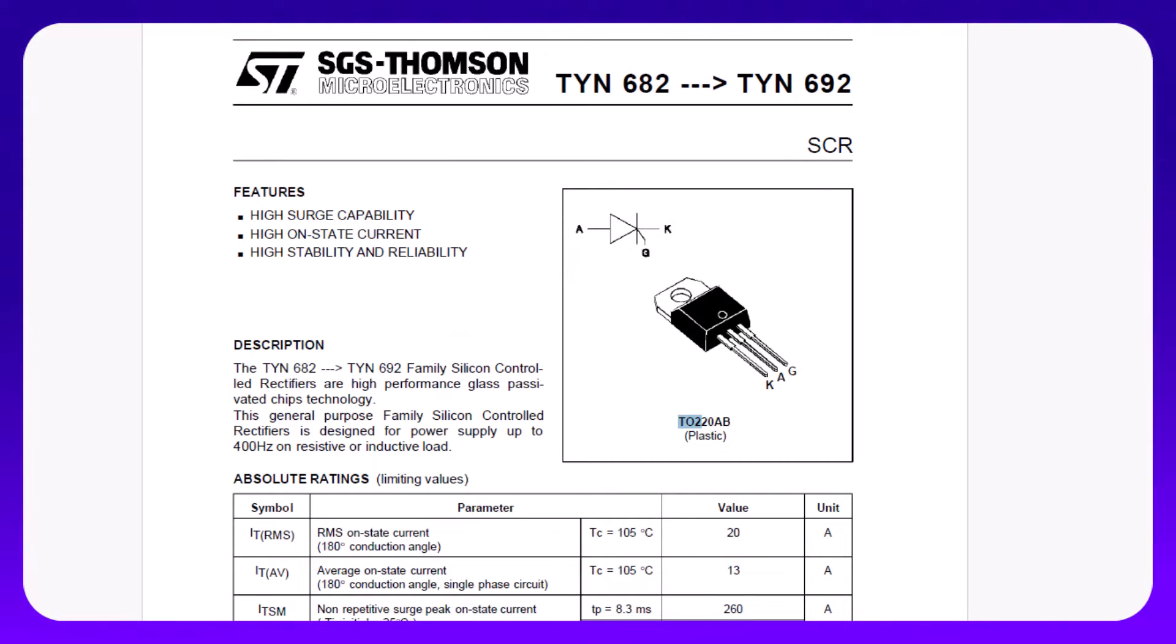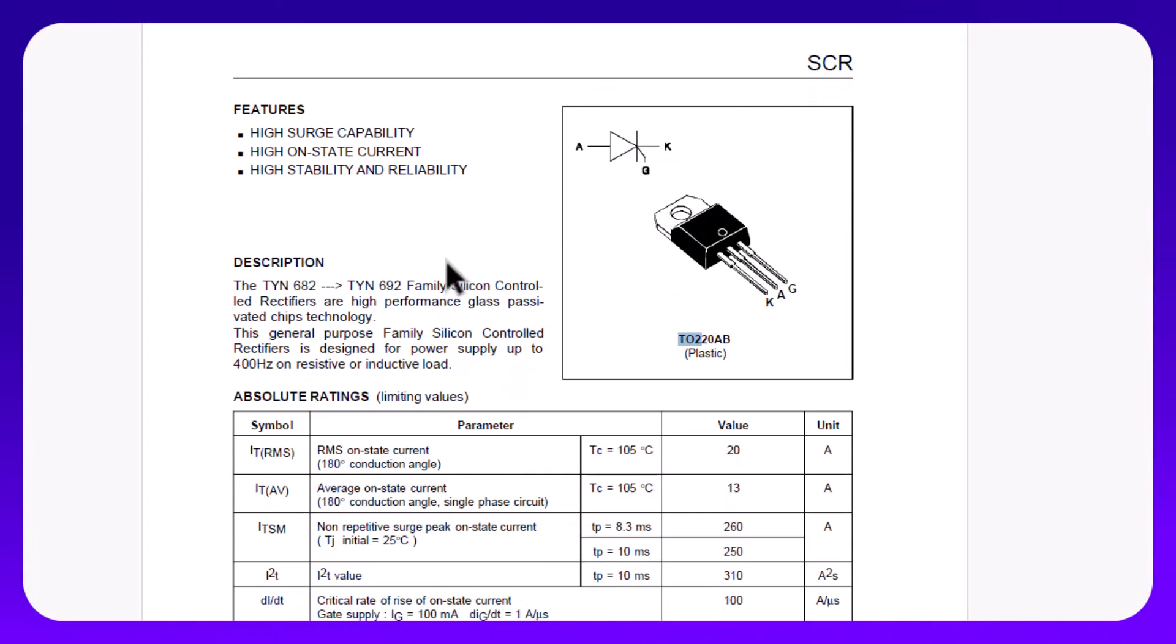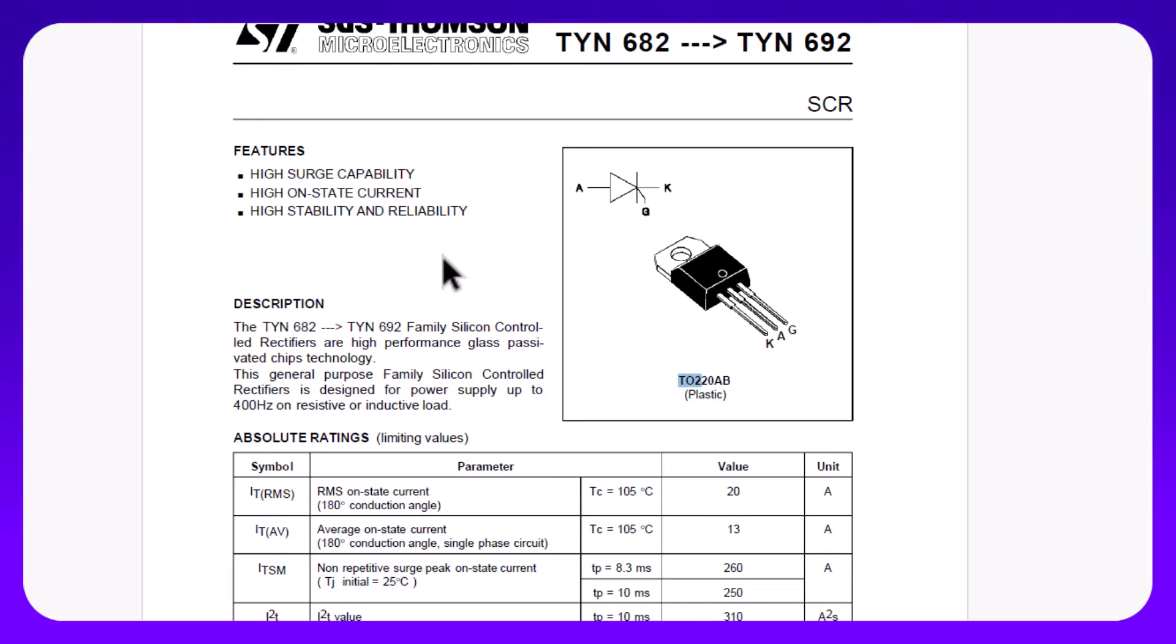All right. So on to the next board. We do the same thing. We look at the chip, TYN692. I Google it. Come to find out it's an SCR or thyristor. And what these devices are known for, it's basically like a little diode here. Okay. But when you turn them on via the gate, then these things can handle a large amount of current through them. And that's the beauty. If you look at the features, high surge current, high own state current, right? Highly reliable, blah, blah, blah.